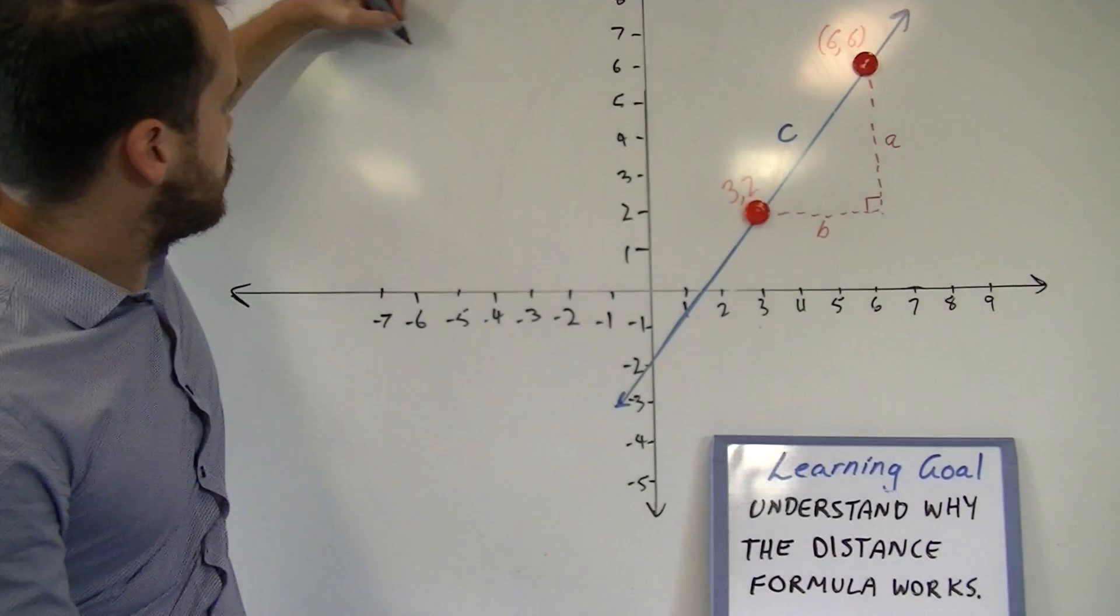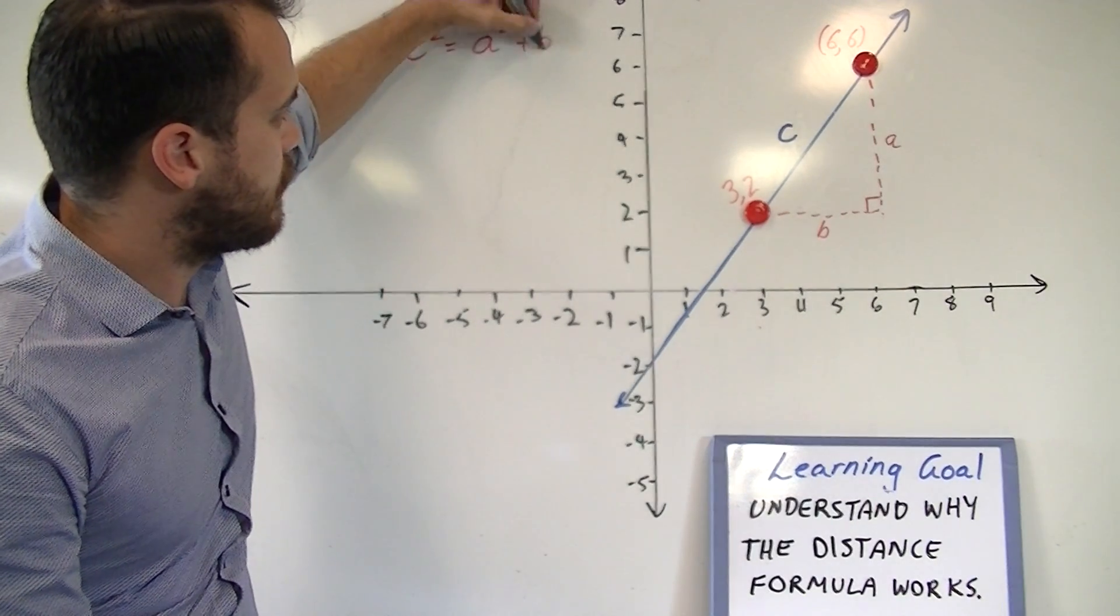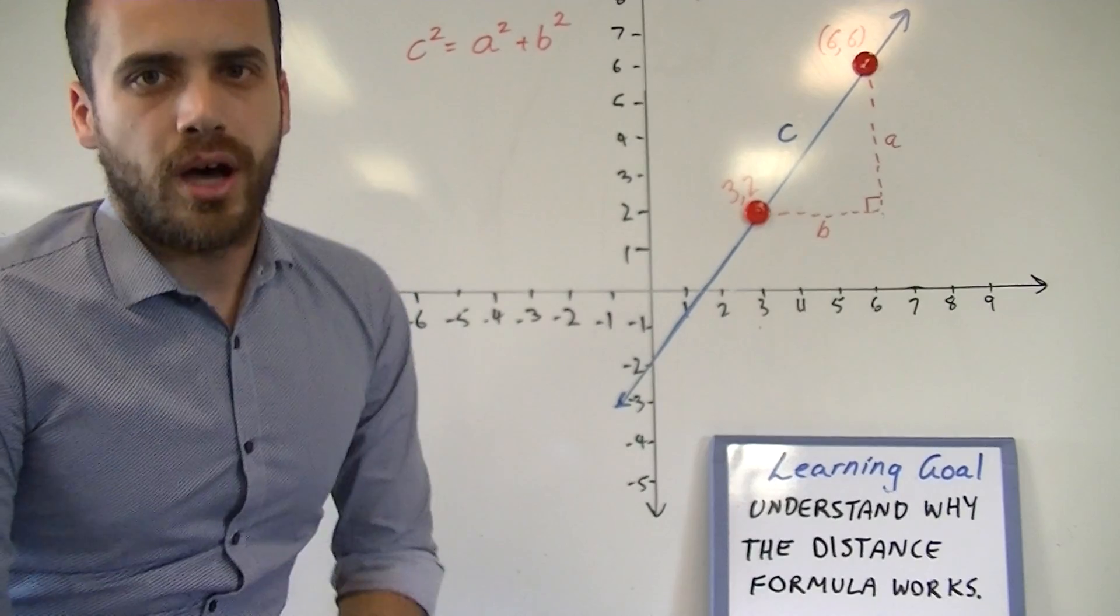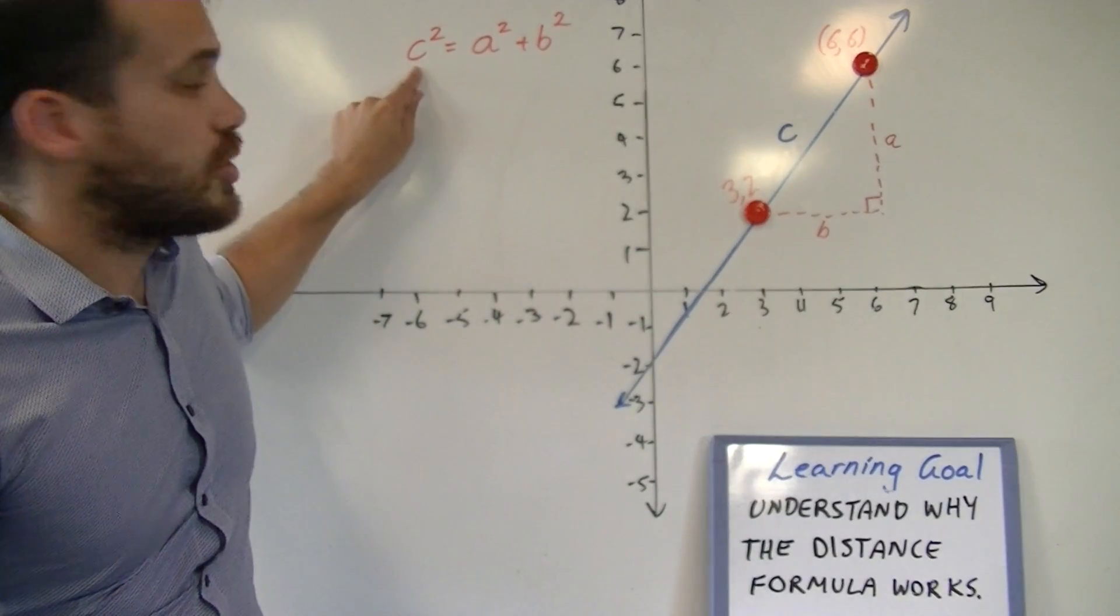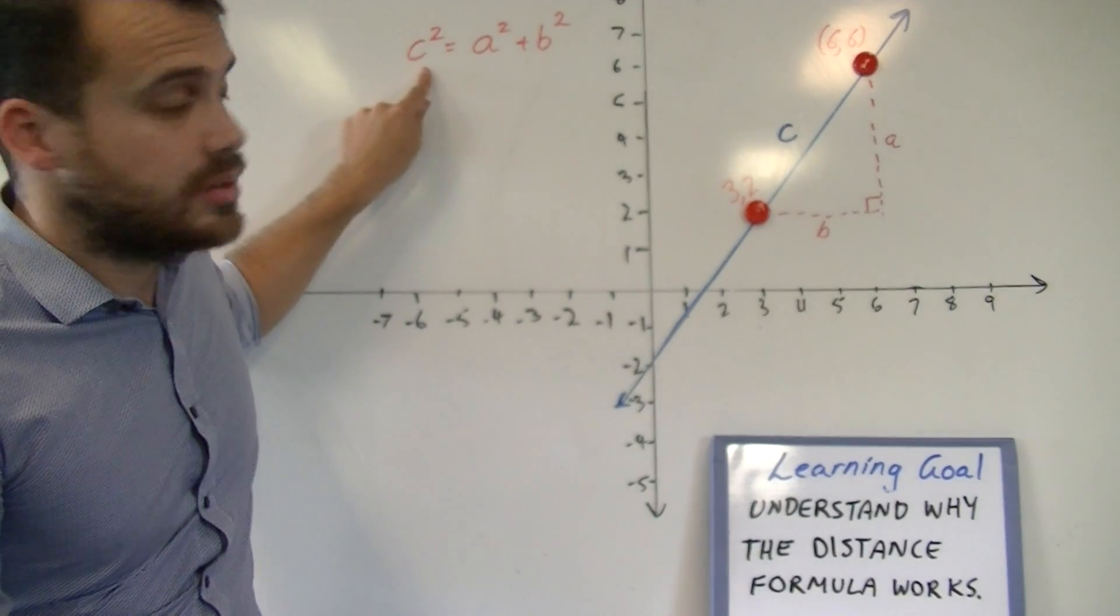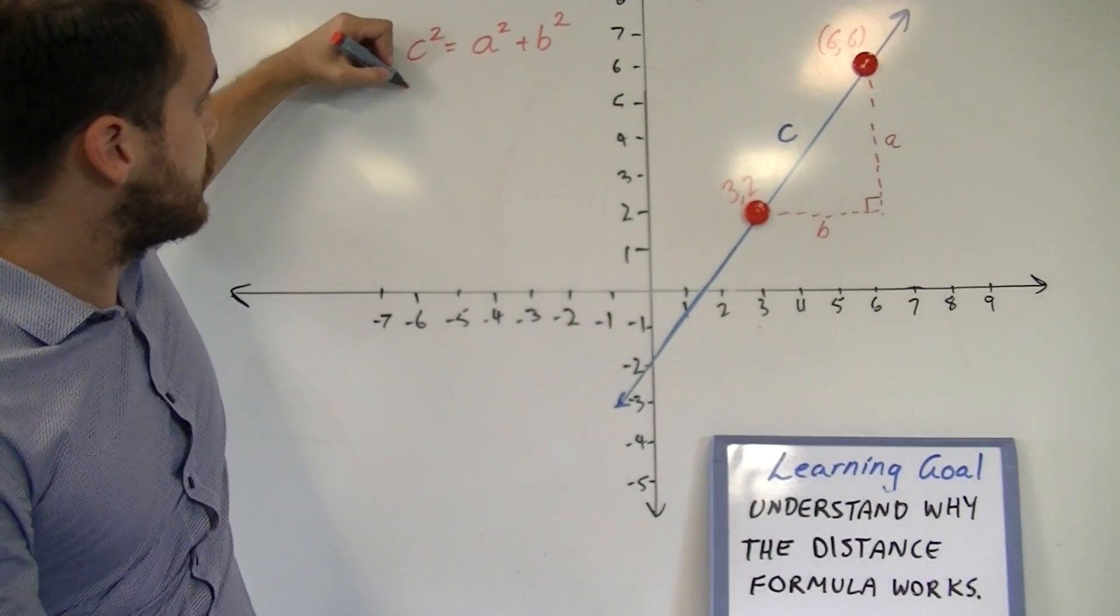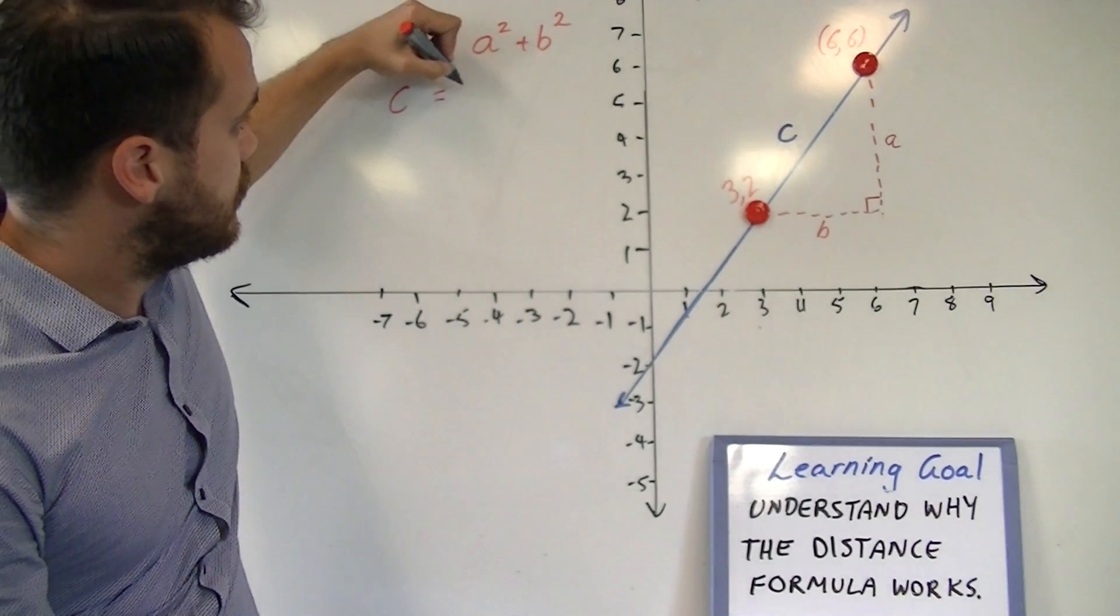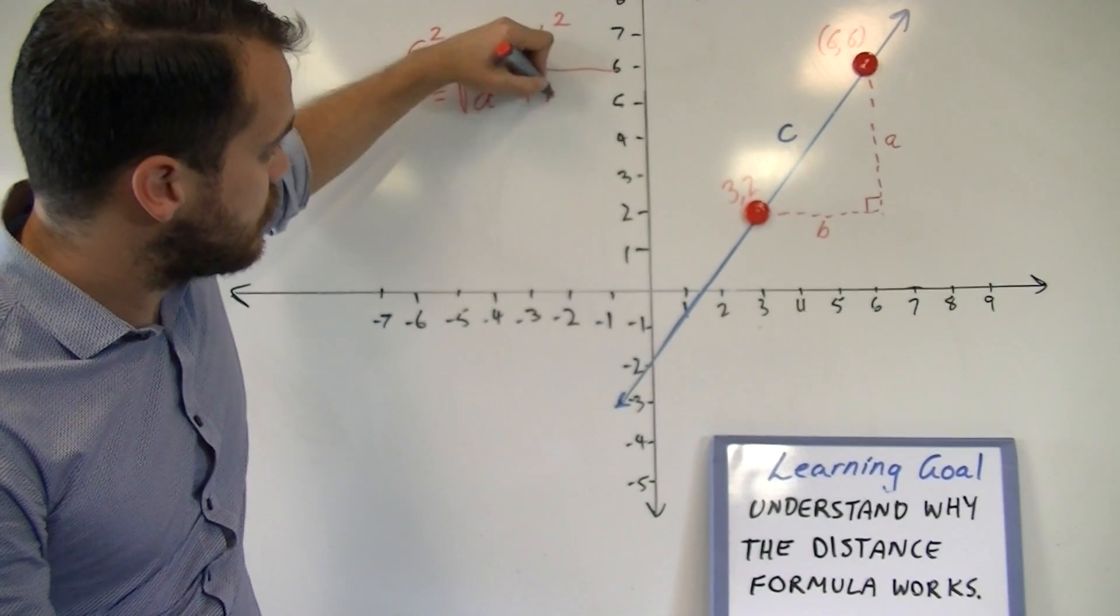which says that C squared equals A squared plus B squared. I might just take Pythagoras' theorem one step further. If you want to know what C is, you can square root both sides. So that's going to look like C is equal to the square root of A squared plus B squared.